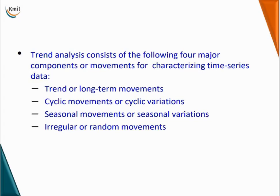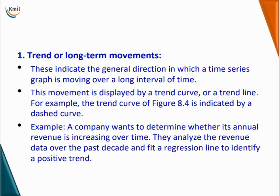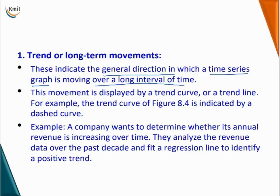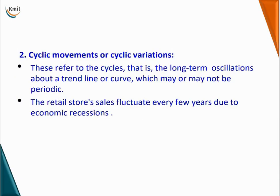Trend analysis consists of four major components for characterizing time series data: trend moment, cyclic moment, seasonal moment, and irregular moment. The first is trend or long-term movement, which indicates the general direction in which a time series graph is moving over a long interval of time. For example, a company analyzes its revenue over the past decade and fits a regression line to identify a positive trend. Cyclic moments refer to long-term oscillations about a trend line or curve which may or may not be periodic — for example, retail store sales fluctuate every year due to economic recession.